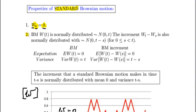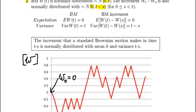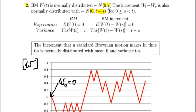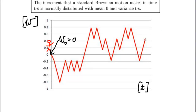Let's have a look at the other properties. Property number 2: Brownian motion is normally distributed with mean 0 and variance t, and the Brownian motion increment W(t) minus W(s) is also normally distributed with mean 0 and variance t minus s. So what does it mean that the Brownian motion is normally distributed with mean 0 and variance t? Say I'm standing here at time equals 0, and I want to know what my Brownian motion will be at time t equals 2. This single realisation of Brownian motion happened to take a value of 0.4, but this is just one realisation.